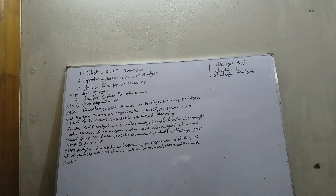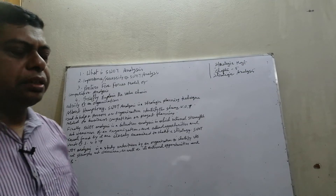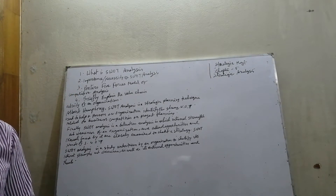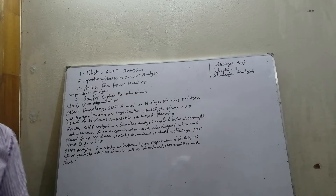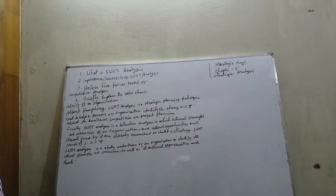In broad sense, SWOT — Strength, Weakness, Opportunity, and Threat — is a framework for identifying and analyzing the internal and external factors that can have an impact on the viability of a project, product, place, or person. Some definitions of SWOT analysis are mentioned below.